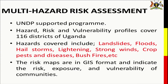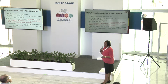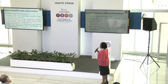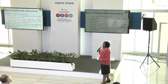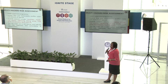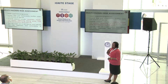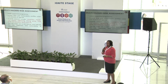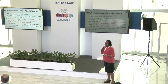The Malthazar risk assessment covers the whole country — we have 116 districts — and we have covered a few hazards such as landslides, droughts, strong winds, and hailstorms. These risk profiles are in GIS format. We have maps and profiles to show how we have classified the risks.